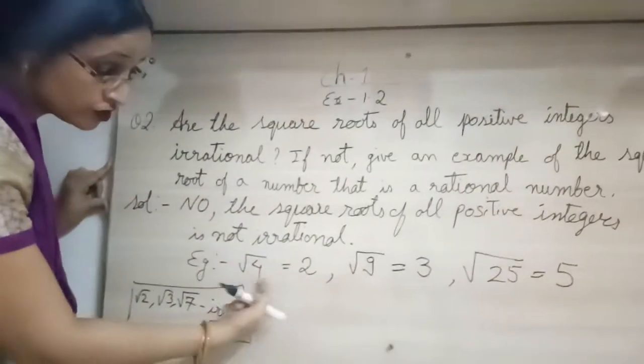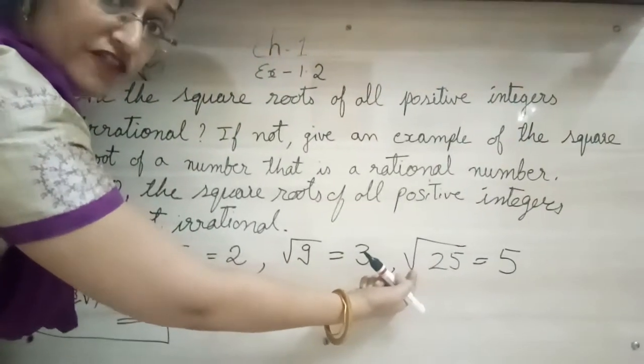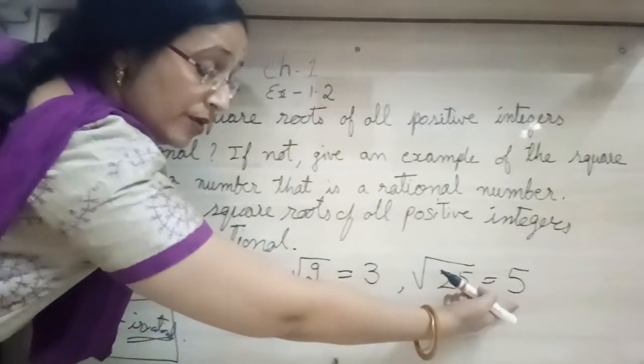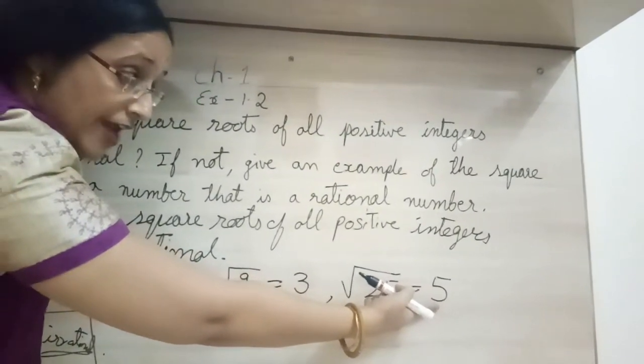But normal perfect squares, like 4, 9, 25, these all are perfect squares. Perfect squares, we get root, then we get a number. And then it is not an irrational number, it is a rational number.